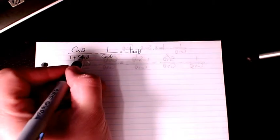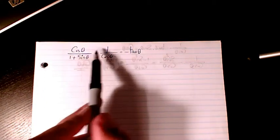What's up guys, this is Masi. Welcome to my channel. In this video I want to show you how to prove the trigonometric identity: cosine theta over 1 plus sine theta minus 1 over cosine theta equals negative tan theta.